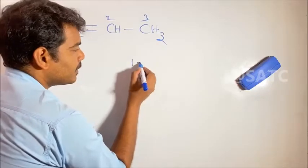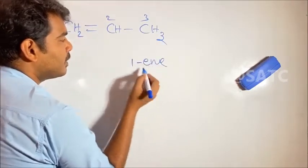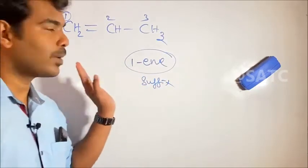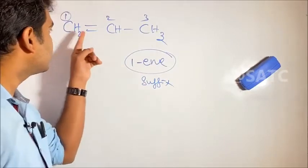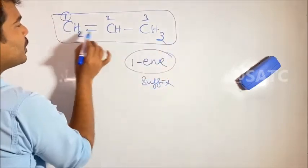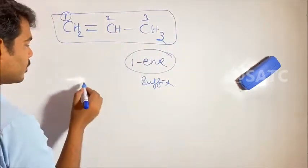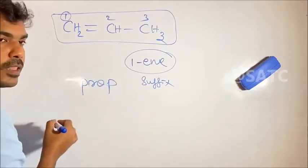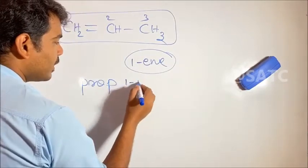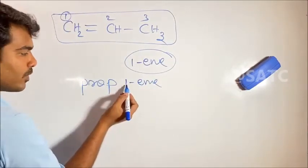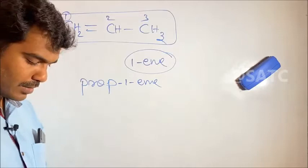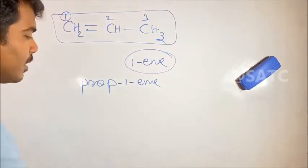We can see that the double bond suffix is '-ene'. This is our suffix. The number of carbons is 1, 2, 3 — that is 'prop-'. The suffix is '1-ene'. So the full name is prop-1-ene. This is the first example.